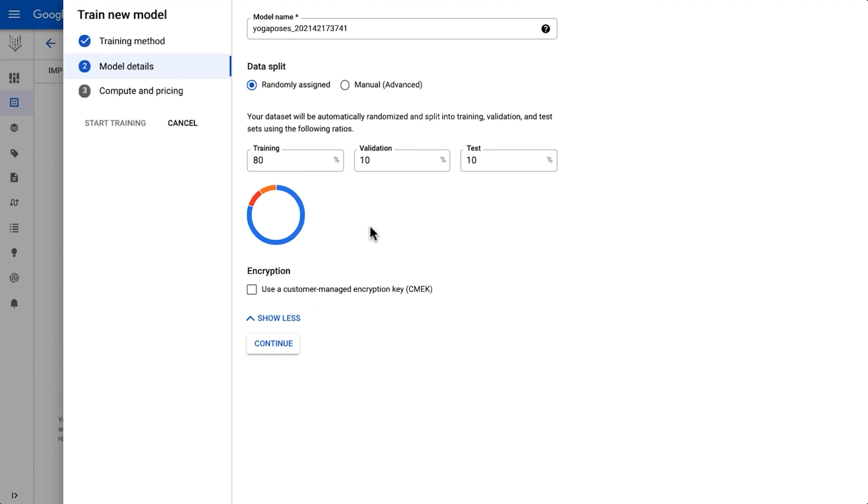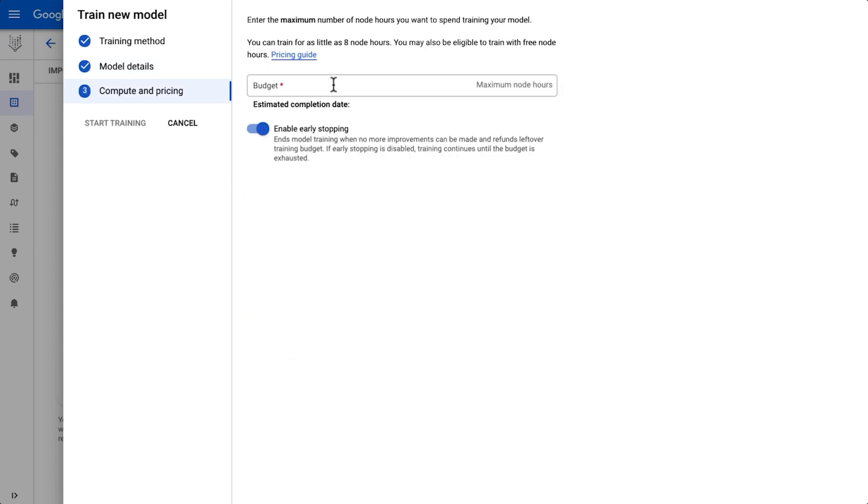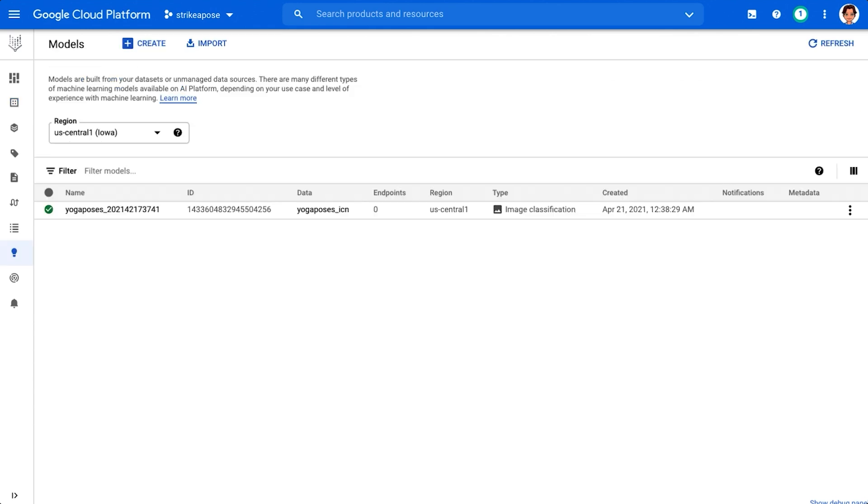Now we define our model. AutoML automatically splits the data into training, validation, and test. But we can change it if we want to. In compute and pricing, we get to select how many node hours we want to train the model. At this point, we wait for the model to train.